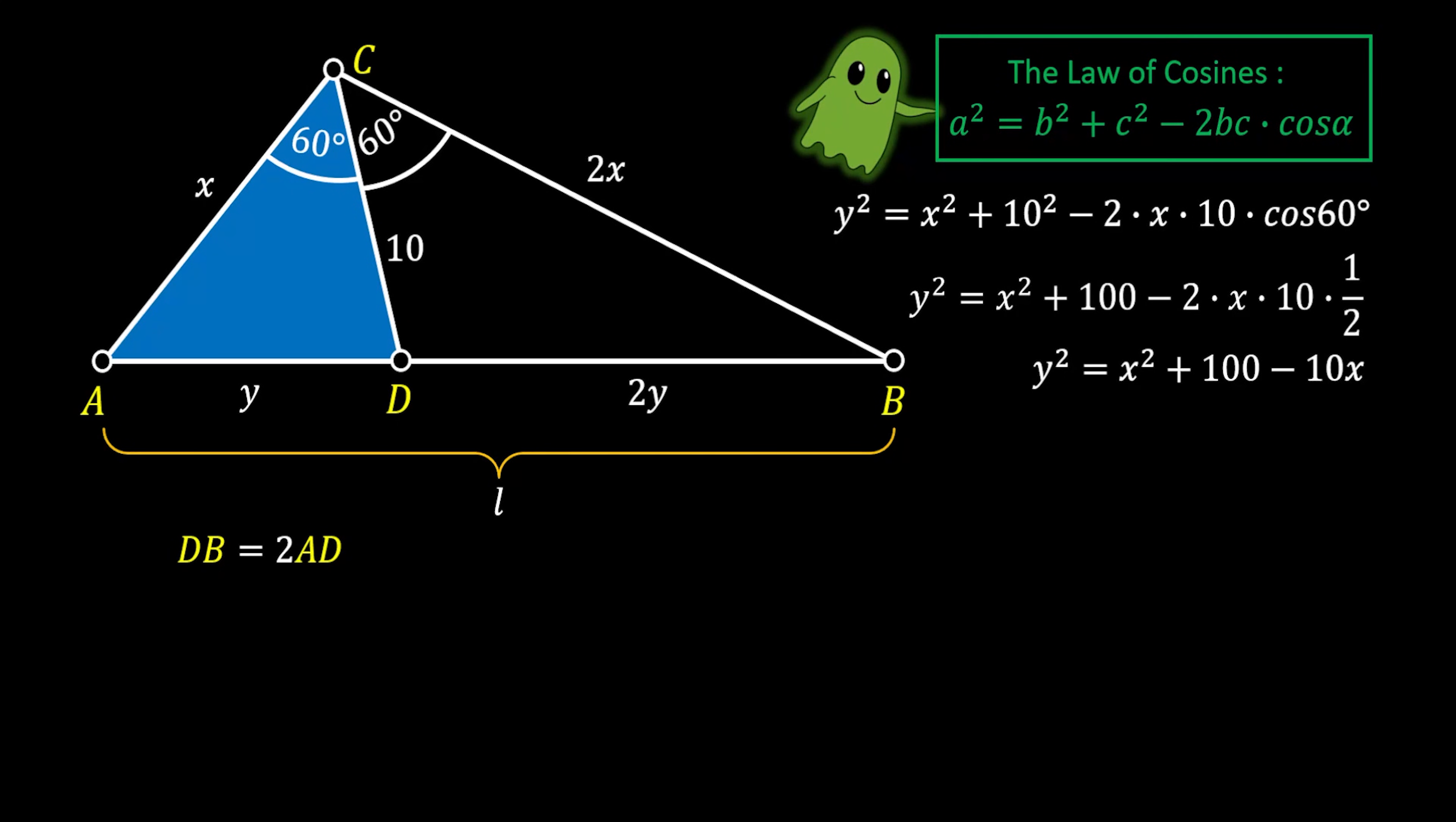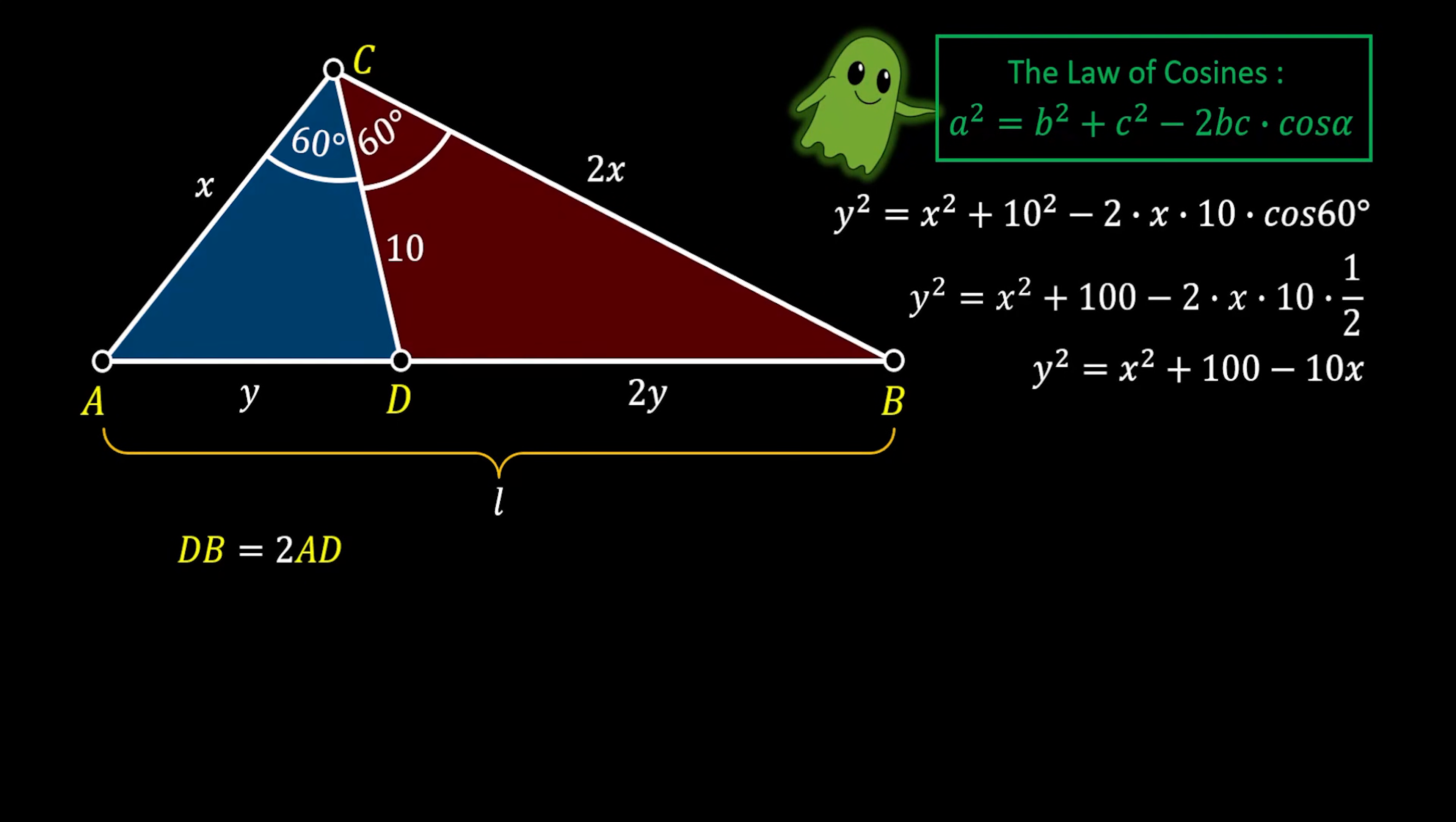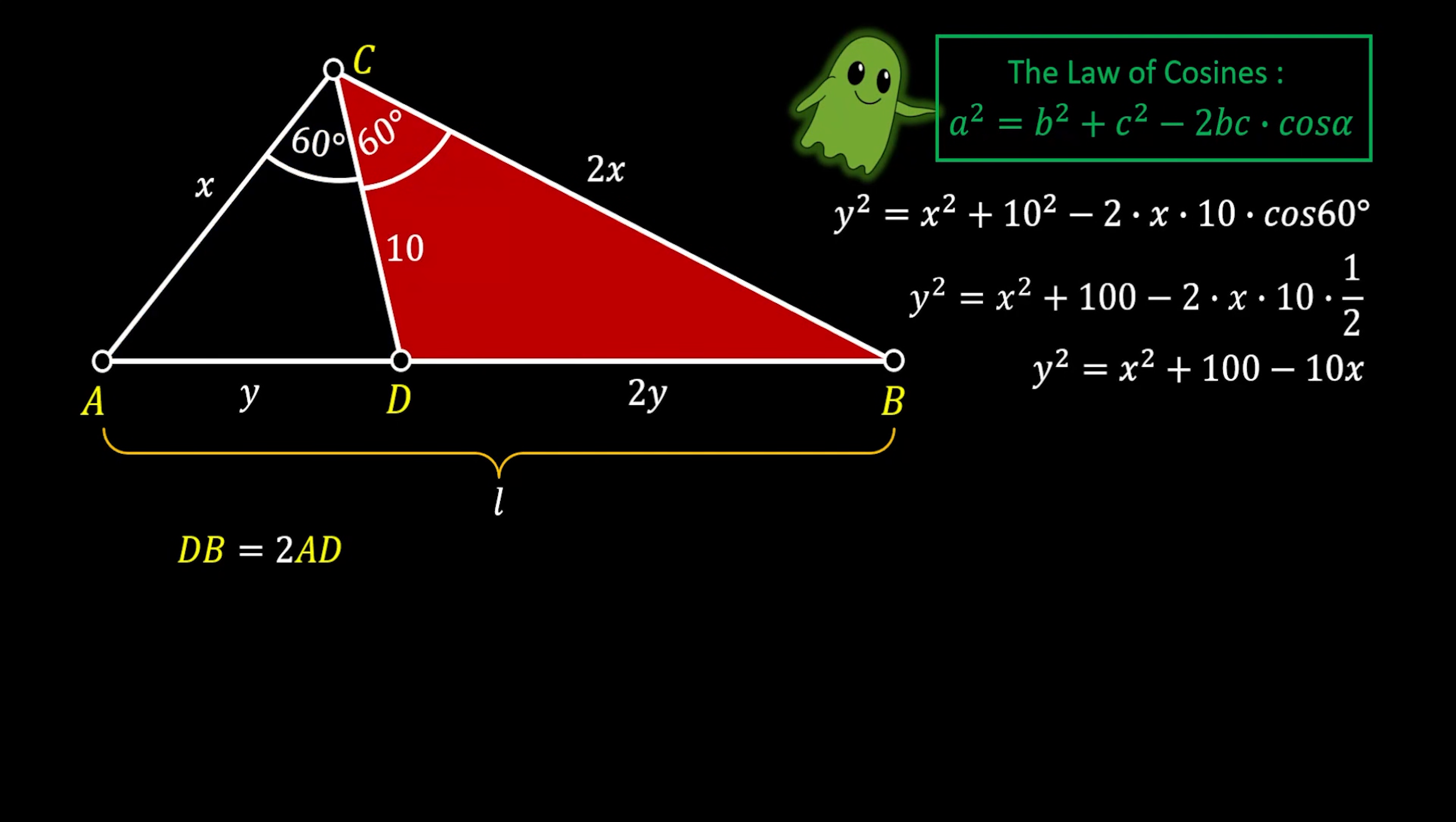Now let's repeat the law of cosines. But this time for the red triangle DBC and for the side of 2Y. And if we do this, we will get the following. Again, we know that cosine of 60 equals to 1 over 2. And we will do the same simplification as before. And finally, we will get that 4Y squared equals to 4X squared plus 100 minus 20X.